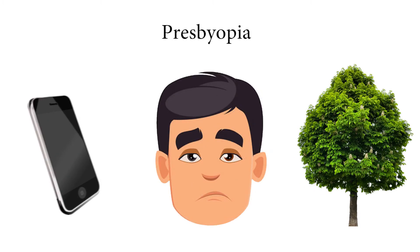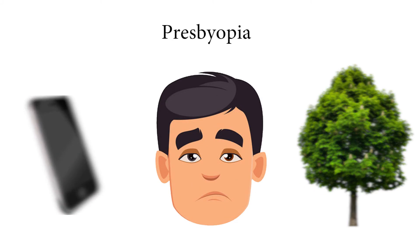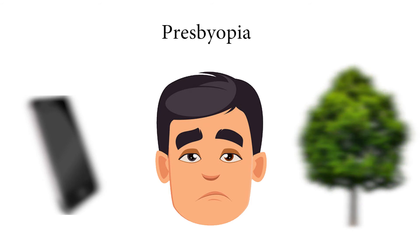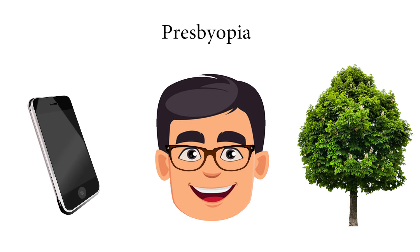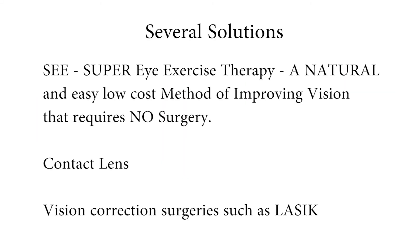Slowly, our full range of accommodation becomes narrowed. This process gradually starts in our 20s, but is so minute that we do not notice it until it starts to affect our daily routine. Though the capabilities of our vision become more limited, presbyopia can be treated with a variety of solutions like corrective lenses, such as glasses, contacts, or surgery.